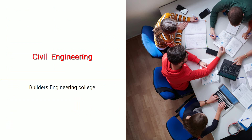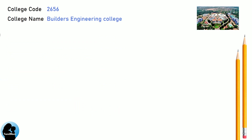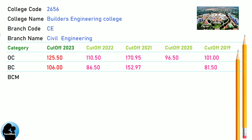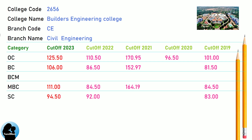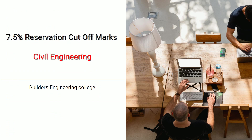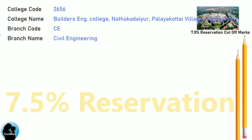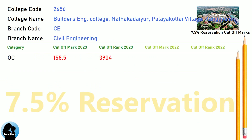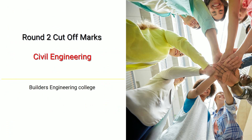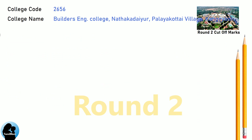DNA Cut-Off for Builders Engineering College in Civil Engineering. DNA 7.5 Reservation Cut-Off for Builders Engineering College in Civil Engineering. DNA Round 2 Cut-Off for Builders Engineering College in Civil Engineering.